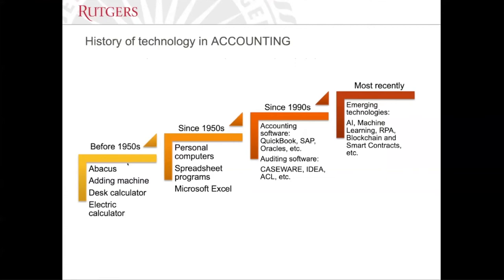Most recently we have emergent technologies, especially artificial intelligence — machine learning is a type of AI — and robotic process automation. Some people also talk about blockchain and smart contracts. We are looking at how these emerging technologies can be added on top of accounting software to improve the functionality of accounting-related technology. In our class, we will focus on how these technologies can be applied in accounting and auditing, and we will learn how to use them.